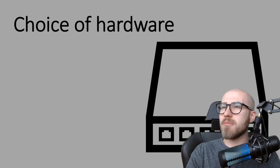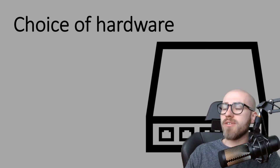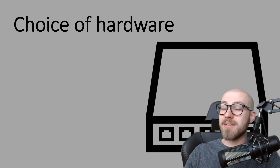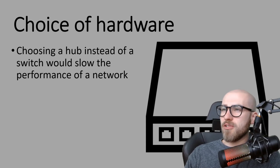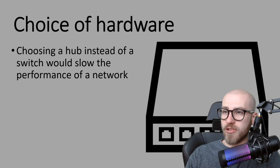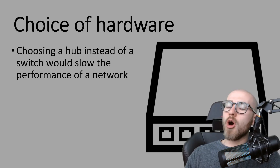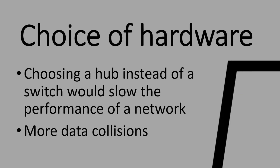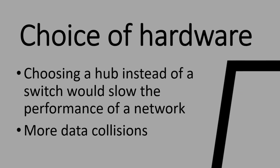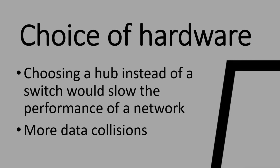Depending on your budget, your choice of hardware will affect the performance of the network. There are multiple pieces of hardware that do a similar job, but some do it in a much more efficient way, so if you can afford the more expensive option it will affect performance positively. For example, you would normally always go for a switch rather than a hub, because with a hub you have more data collisions, whereas a switch uses a MAC address so data goes directly to where it needs to be, meaning fewer collisions and much faster performance.